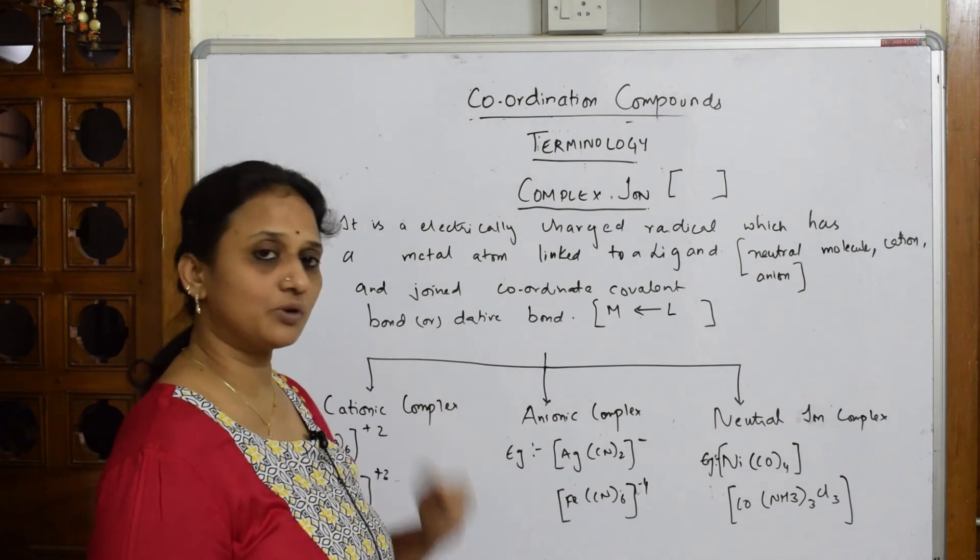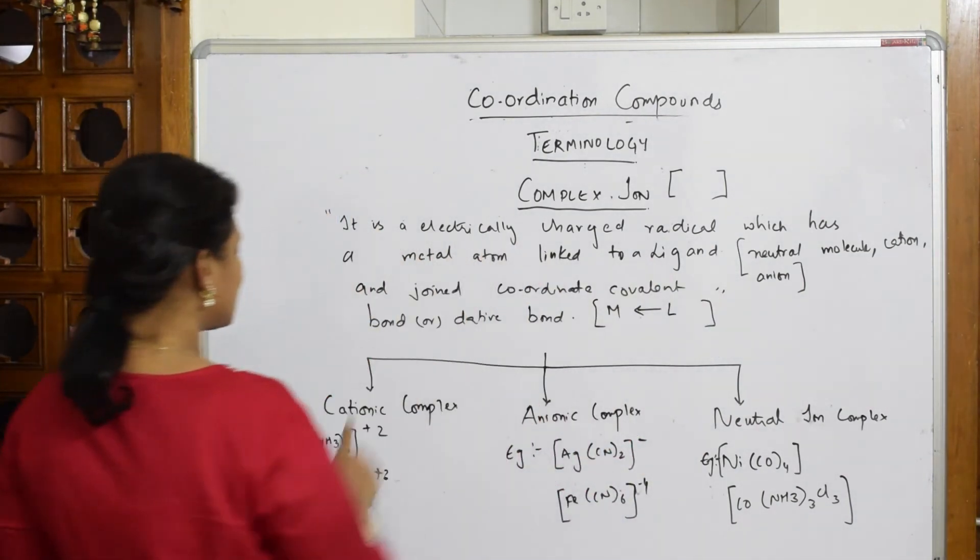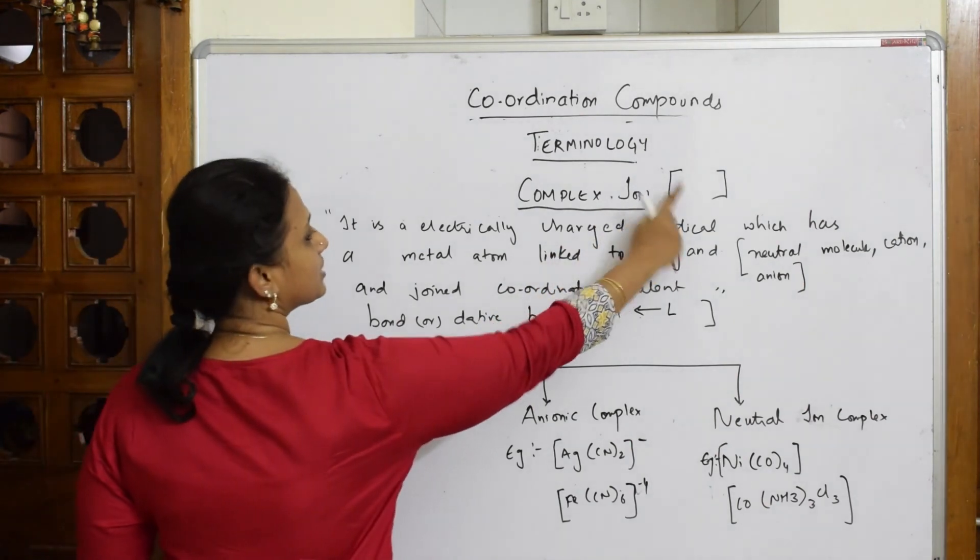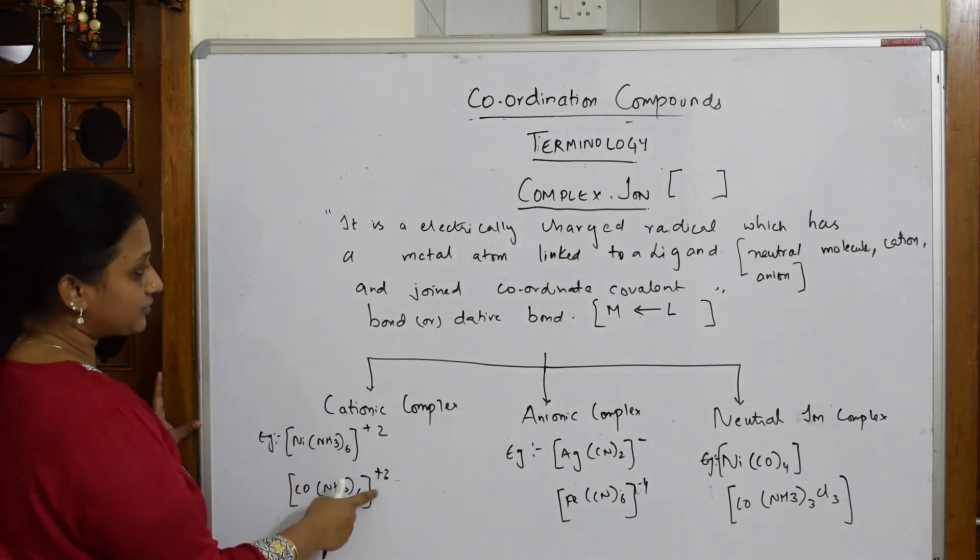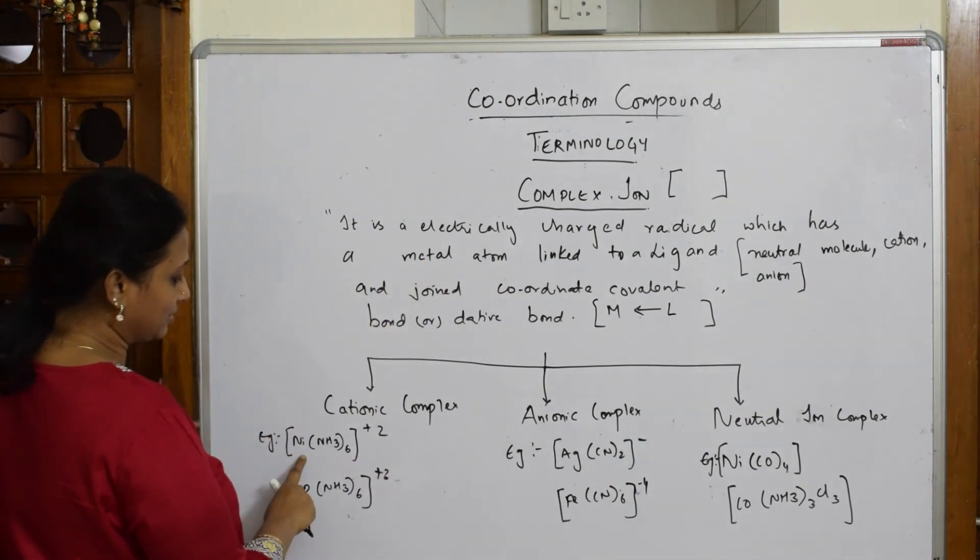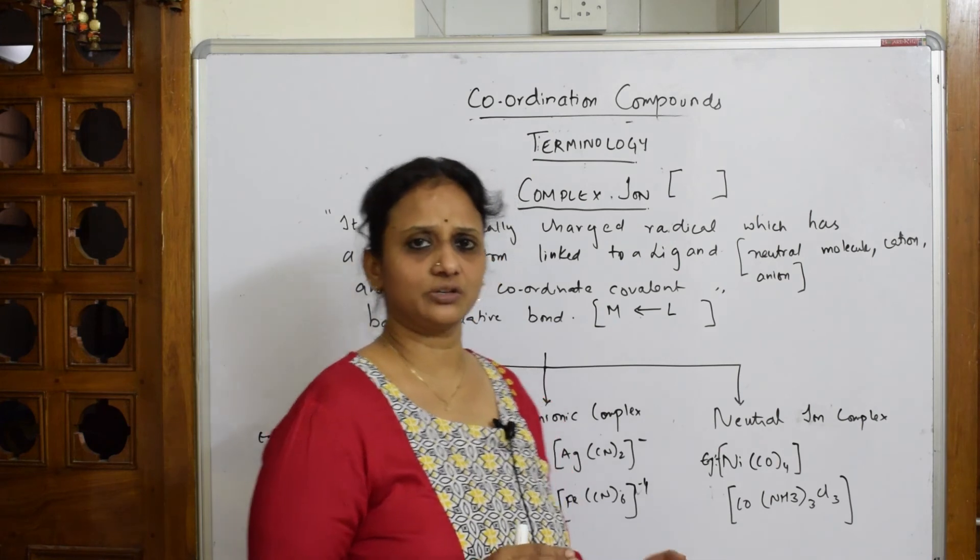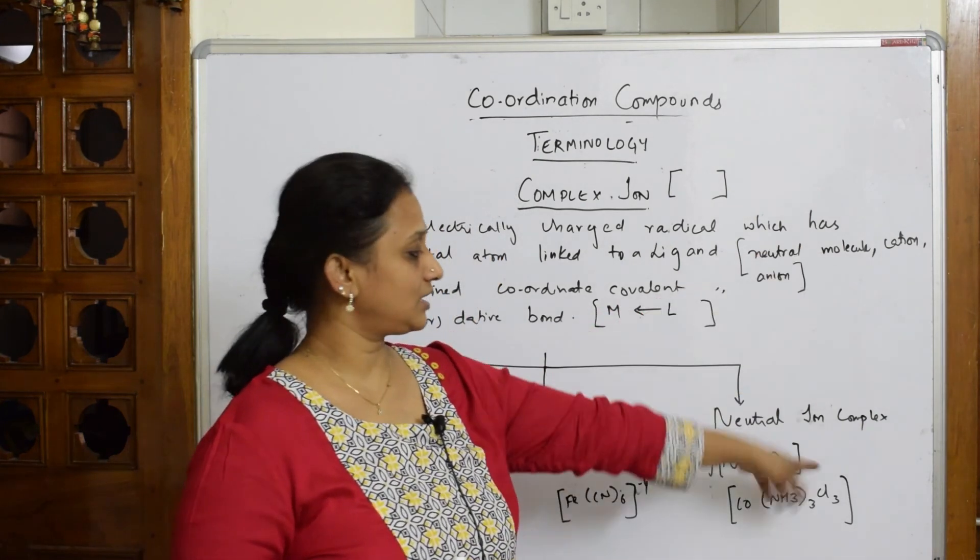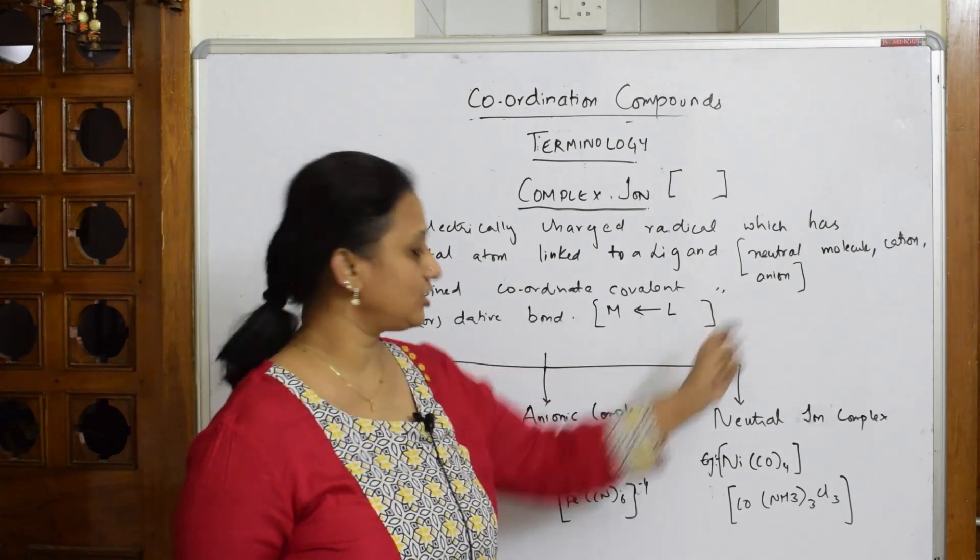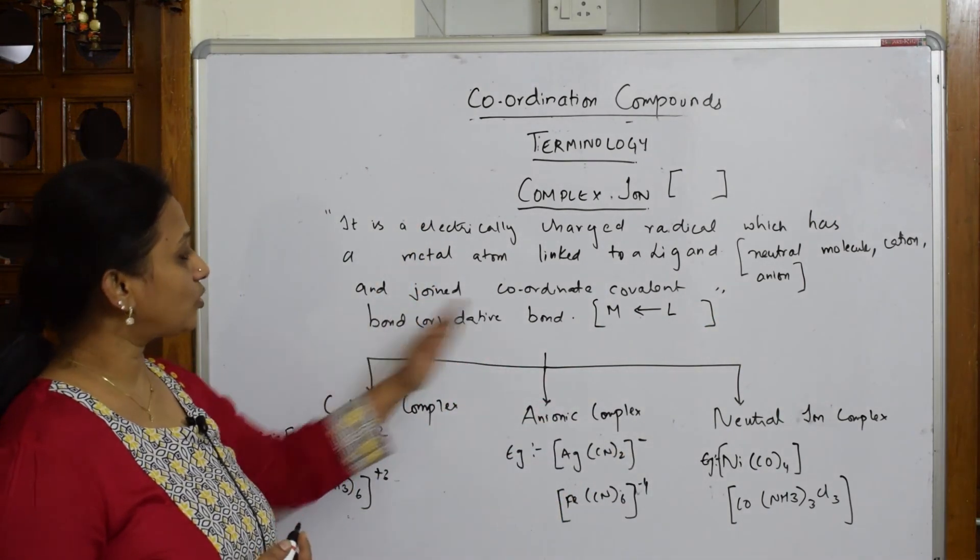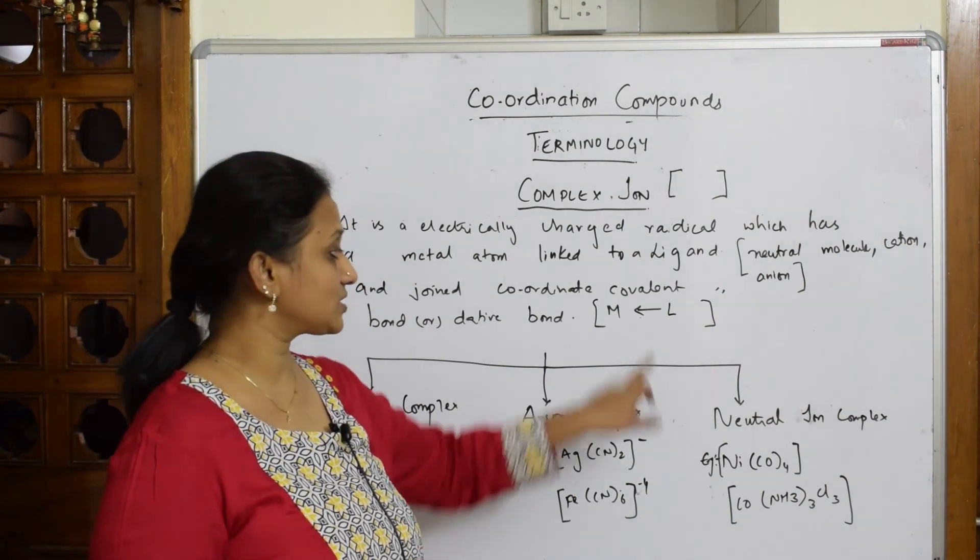You can write that it's represented by square brackets, then discuss the charge. Start with metal linked with ligand - combinations can be neutral (charge becomes zero), cationic, or anionic. They're joined where one shares and one accepts electrons.